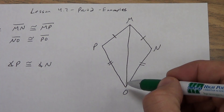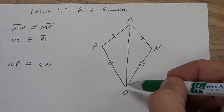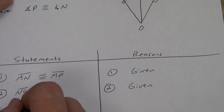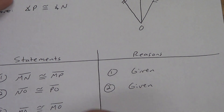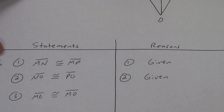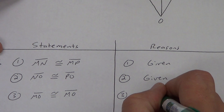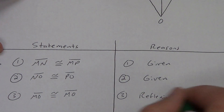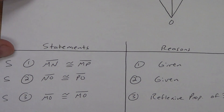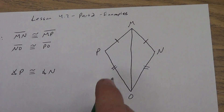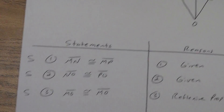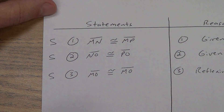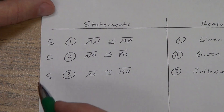Two sides is not enough. So I have to look at the picture and ask myself, is there another thing that would be really easy to figure out? See this MO right here — what do we know about MO? MO has to be congruent to itself. MO has to be congruent to MO. Any time we say that, remember, we use the reflexive property of congruence. I'm going to put an S off to the side and mark up my picture. Then I'll ask myself: is three sides enough to say my triangles are congruent? Yes, it is.